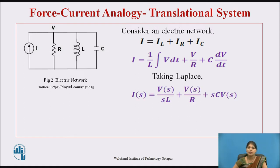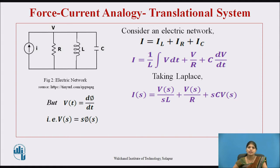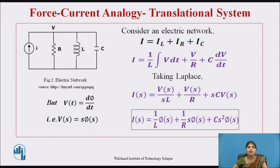Taking the Laplace of the above equation: I(s) = V(s)/sL + V(s)/R + sC·V(s). To get this in the same form as F(s), we use the relation that voltage is the rate of change of flux with respect to time: V(t) = dφ/dt, so V(s) = s·φ(s). Substituting, the equation becomes: I(s) = (1/L)φ(s) + (1/R)s·φ(s) + Cs²φ(s). Now I(s) and F(s) are in the same form.